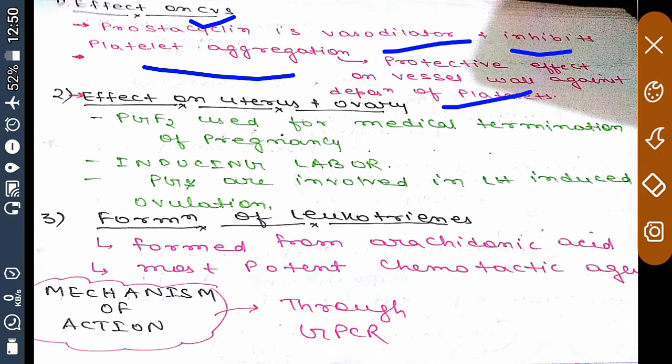Regarding effects on uterus and ovary, PGF2 (prostaglandin F2) is used for medical termination of pregnancy and to induce labor. Some prostaglandins are also involved in LH-induced ovulation.